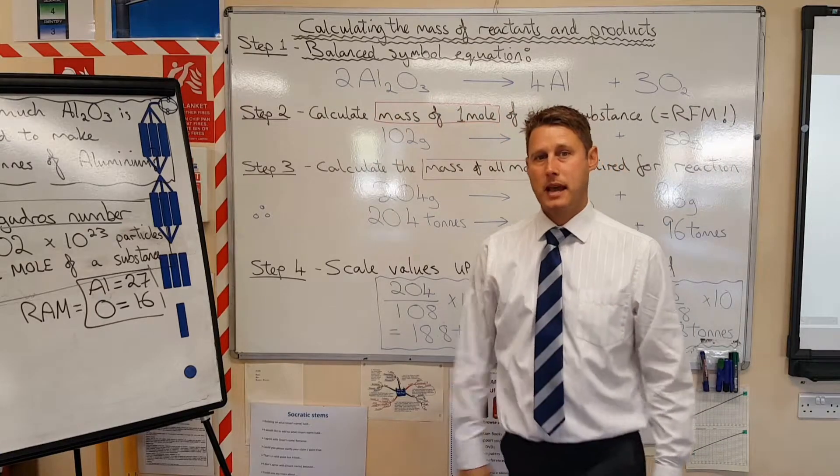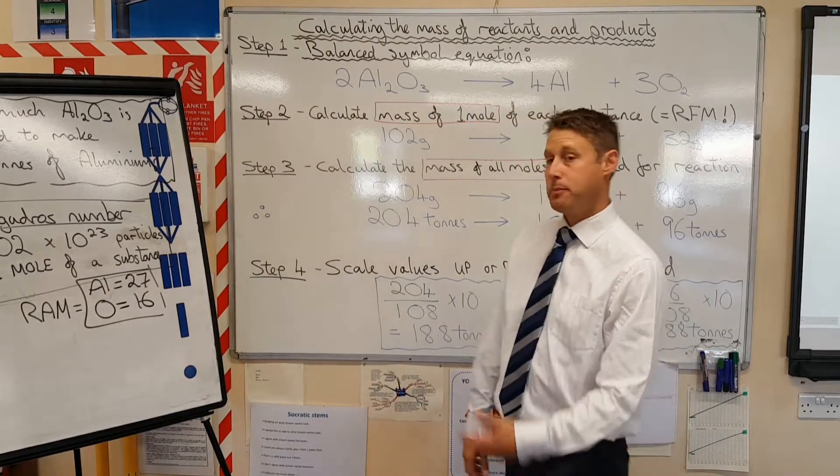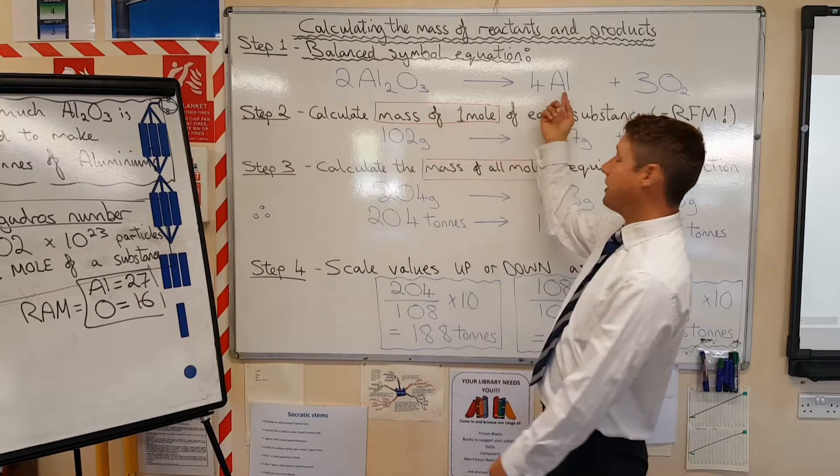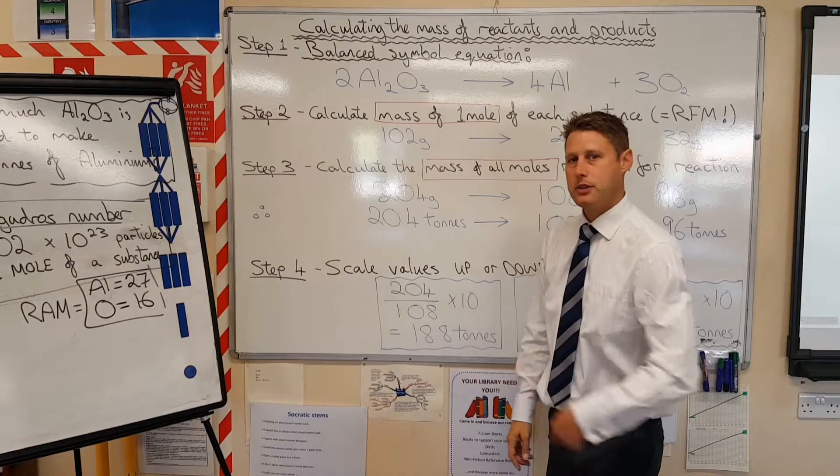Because your boss is not going to be happy if you put too much in and you waste it. Equally, your boss is not going to be too happy if you don't put enough aluminum oxide in and you don't end up with a full 10 tonnes. So here's how we do it.